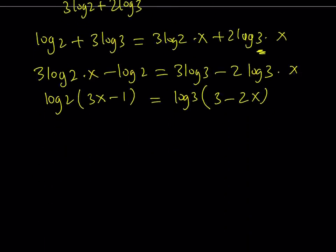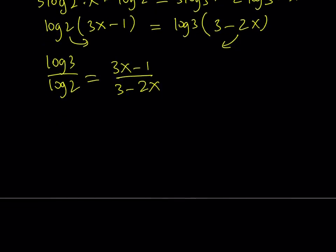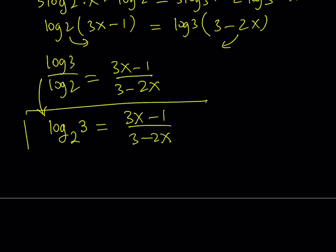Okay so let's go ahead and make the divisions log 3 over log 2. So we can just go ahead and divide by that and divide by this. It's going to equal 3x minus 1 divided by 3 minus 2x. And as we mentioned before we can use the change of base formula backwards and this is equivalent to log base 2 of 3 and that's what I was trying to get. So this is going to be my answer in terms of x.